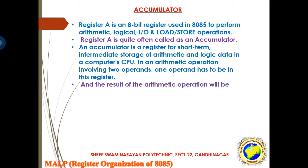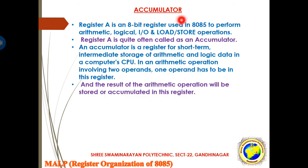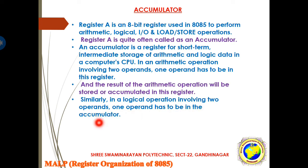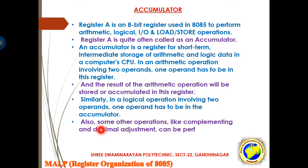The result of the arithmetic operation will be stored or accumulated in this register. If you want to add two values, one is already in the accumulator and the answer is accumulated back into the register. Similarly, in a logical operation involving two operands, one operand has to be in the accumulator. Also, sometimes operations like complementing or decimal adjustment can be performed only in the accumulator. These are the simple theory of accumulator, which will be understood better through a diagram.